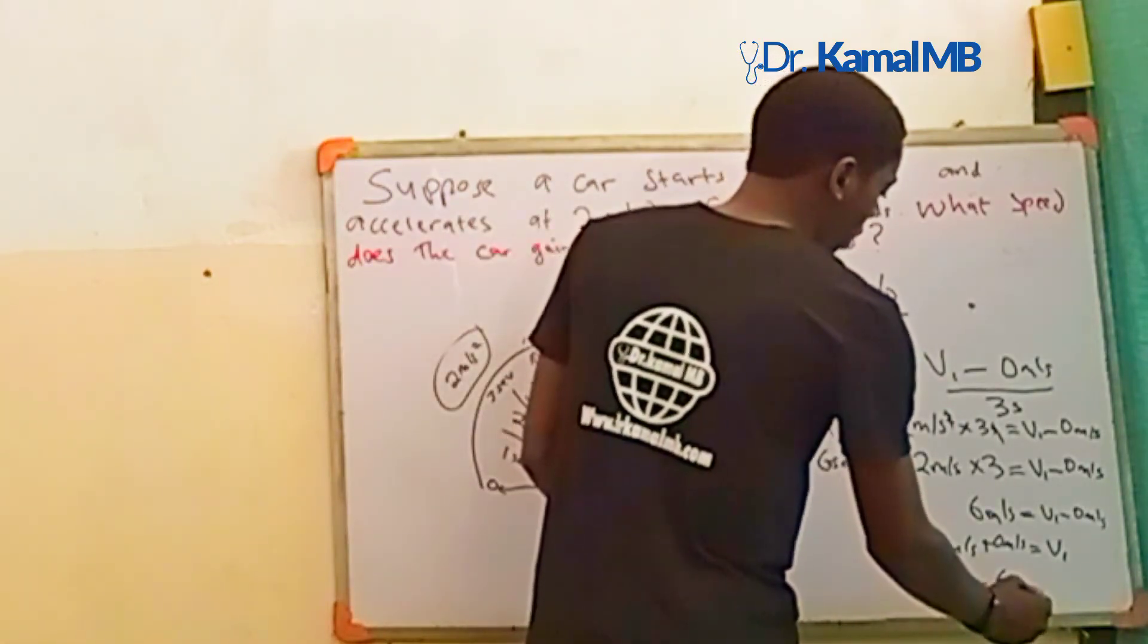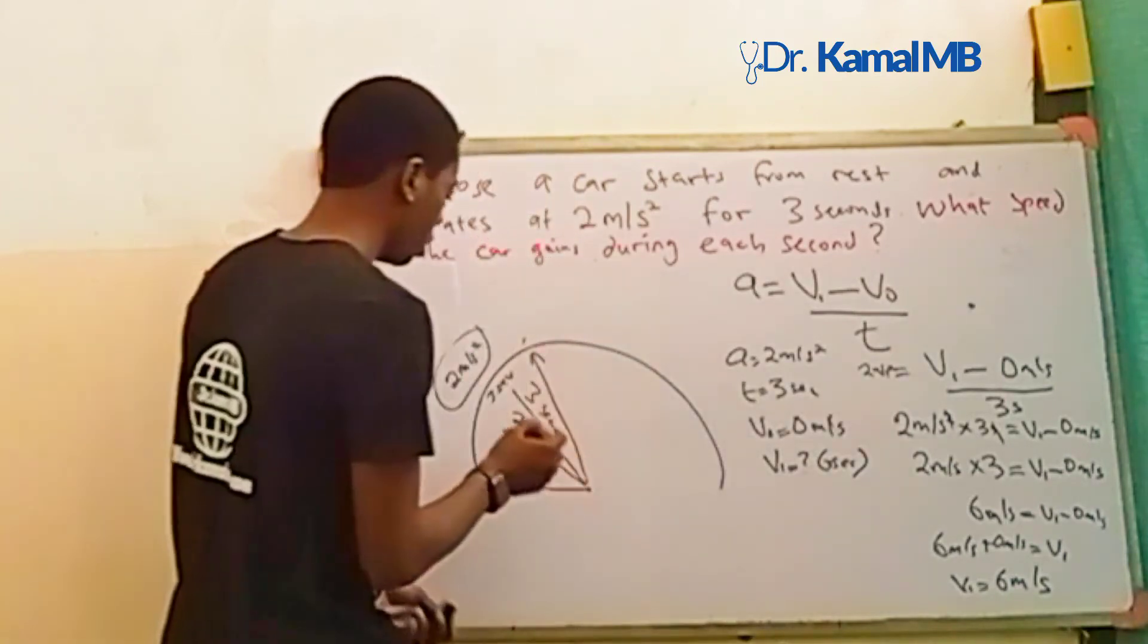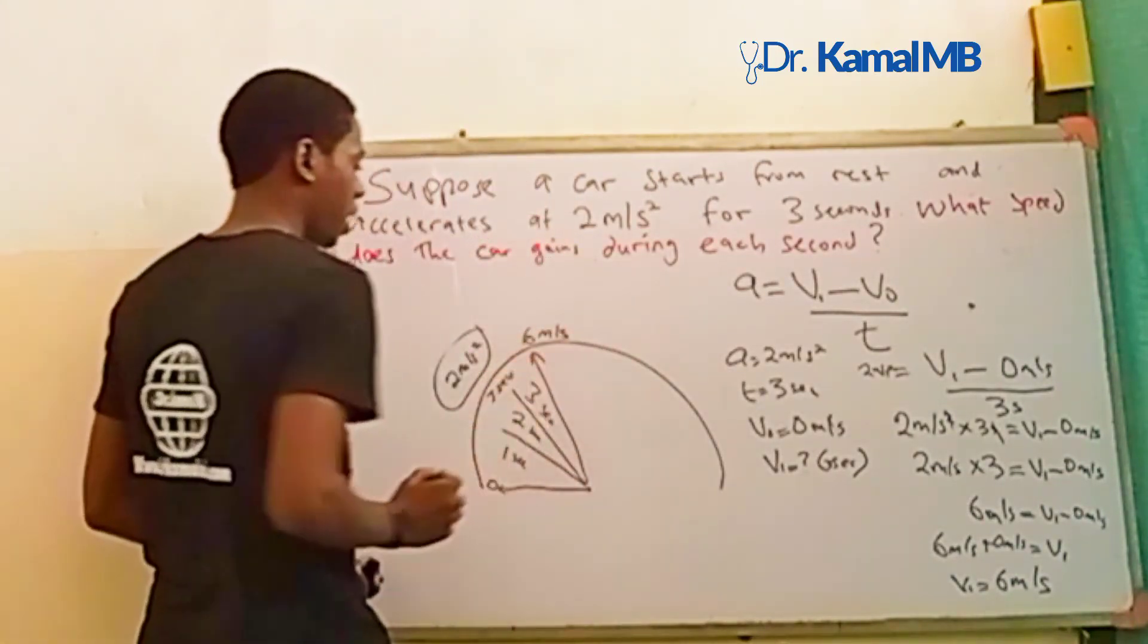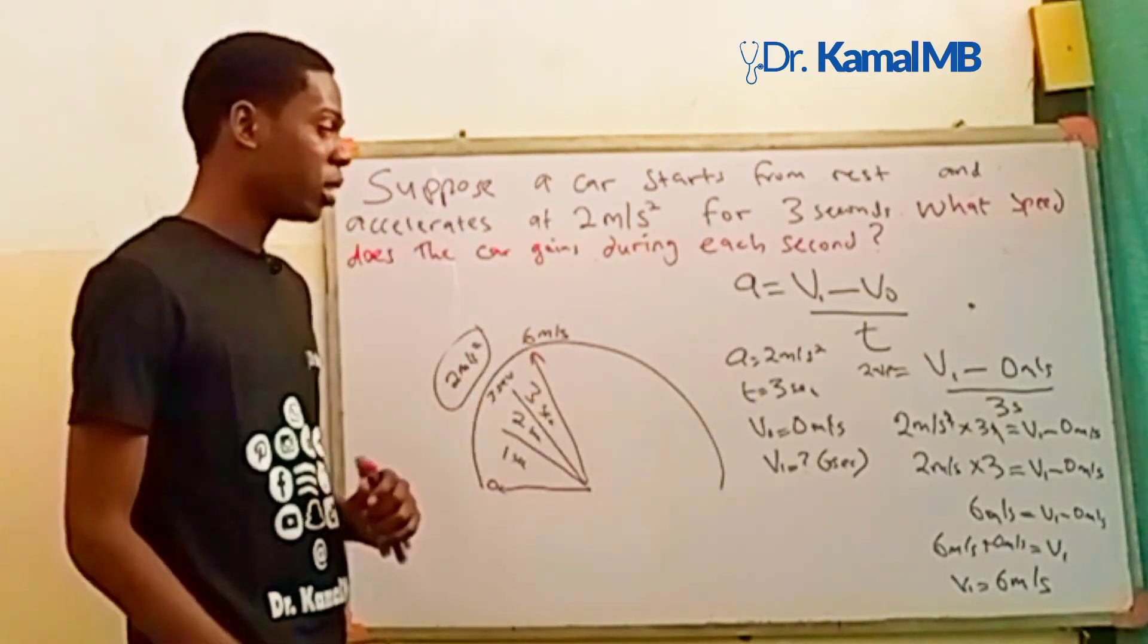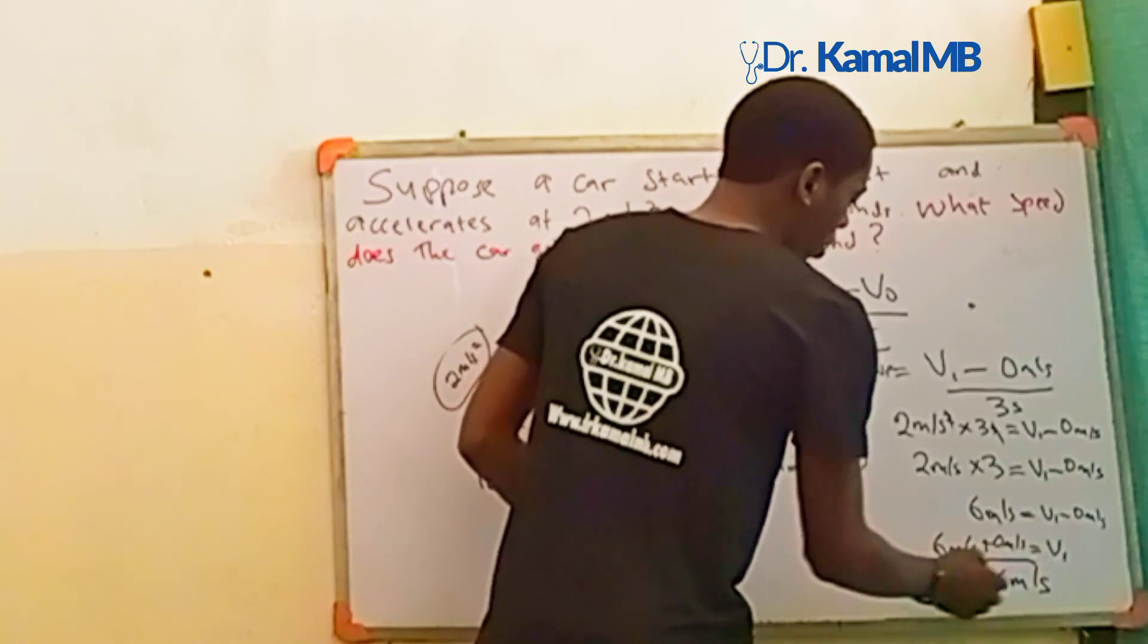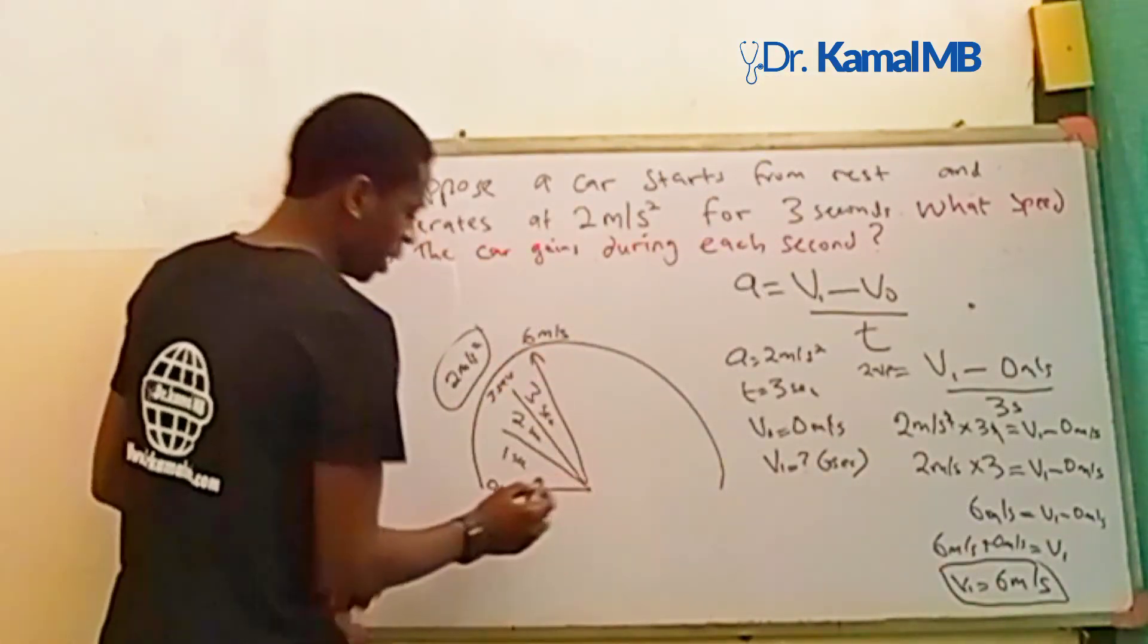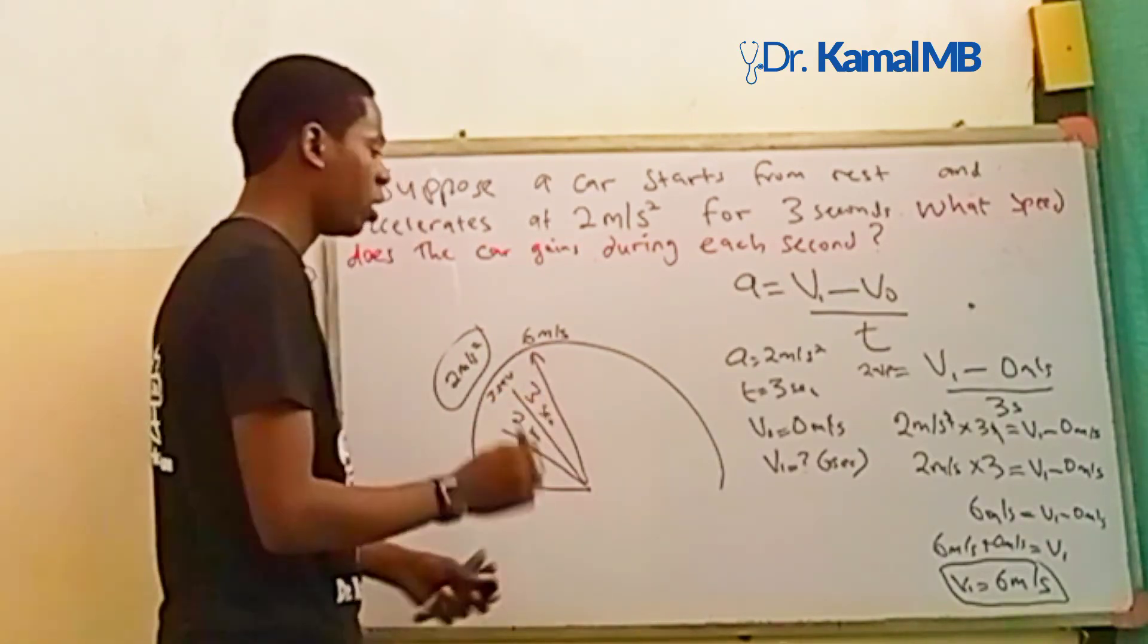The answer is 6 meters per second. When you calculate this, you get 6. This makes sense because the car started from rest and accelerated at 2 meters per second squared for 3 seconds.